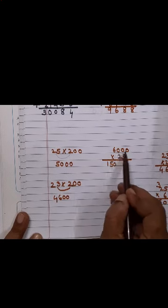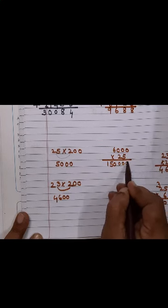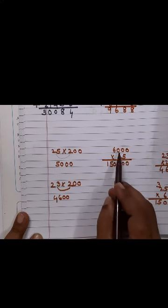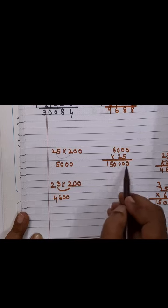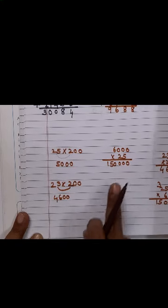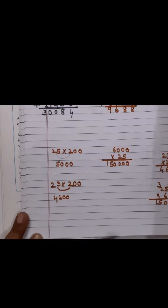Now these 3 zeros are different. So when you are inserting, please be careful. Count your zeros. 25 into 6 is 150, and then you put these 3 zeros. Be careful children with the zeros. Whenever you multiply by 10, 100, 1000, be careful with your zeros.